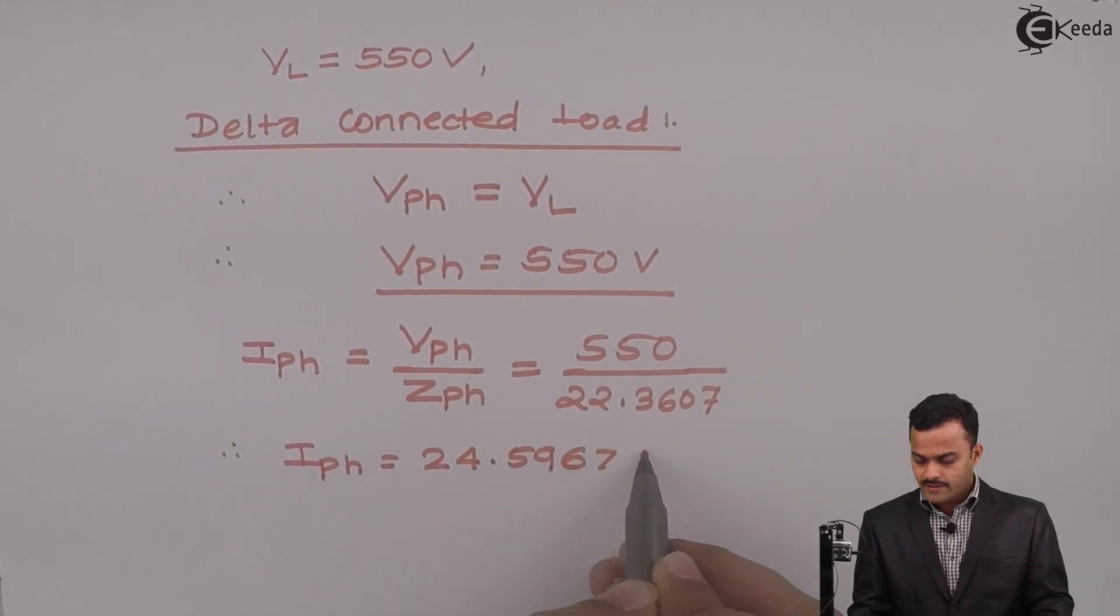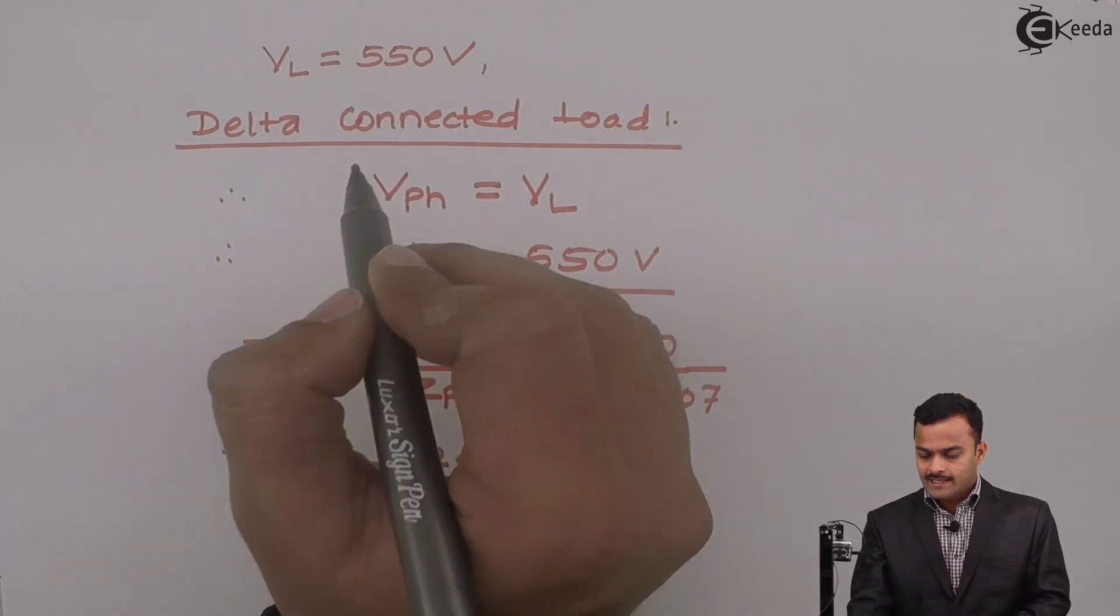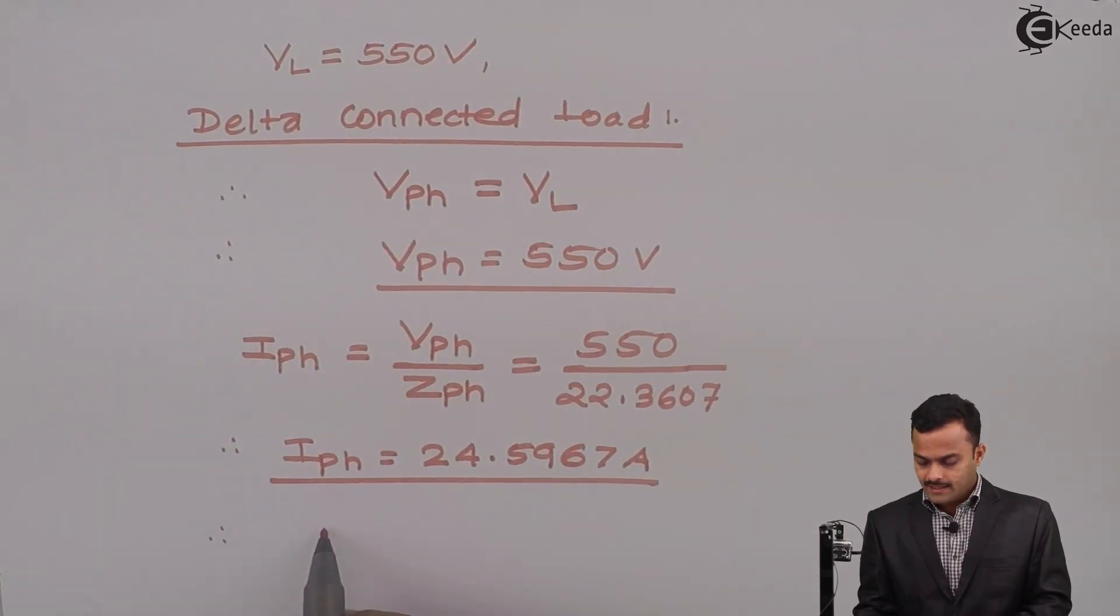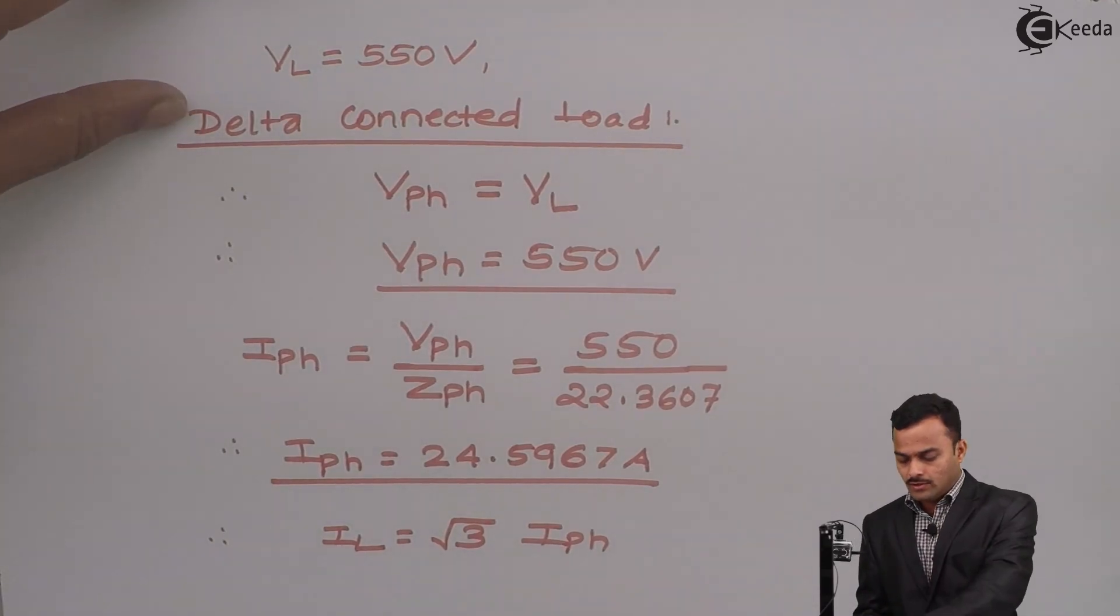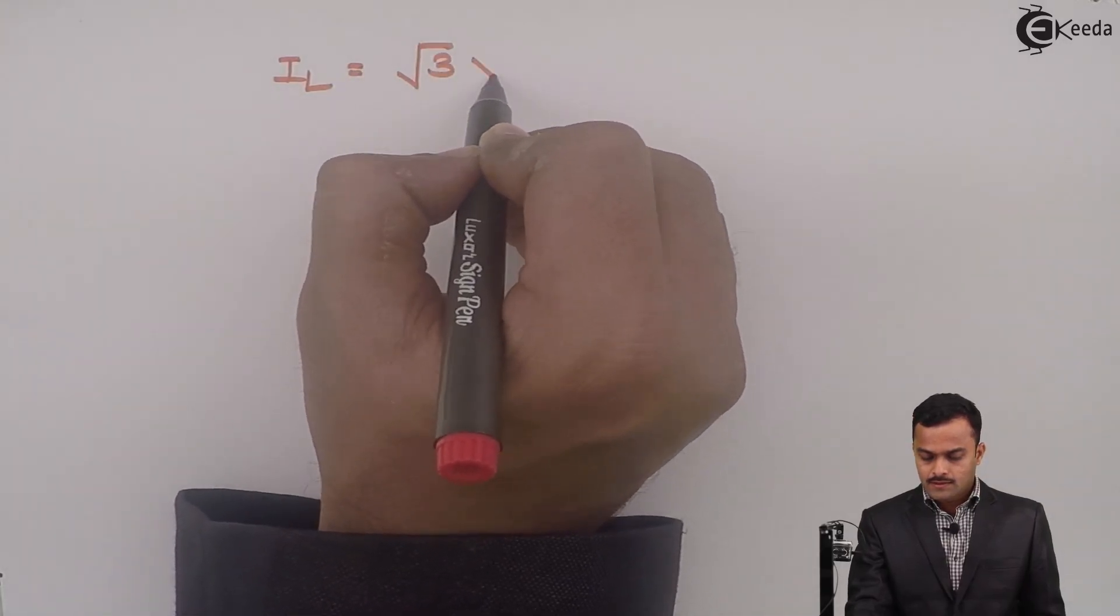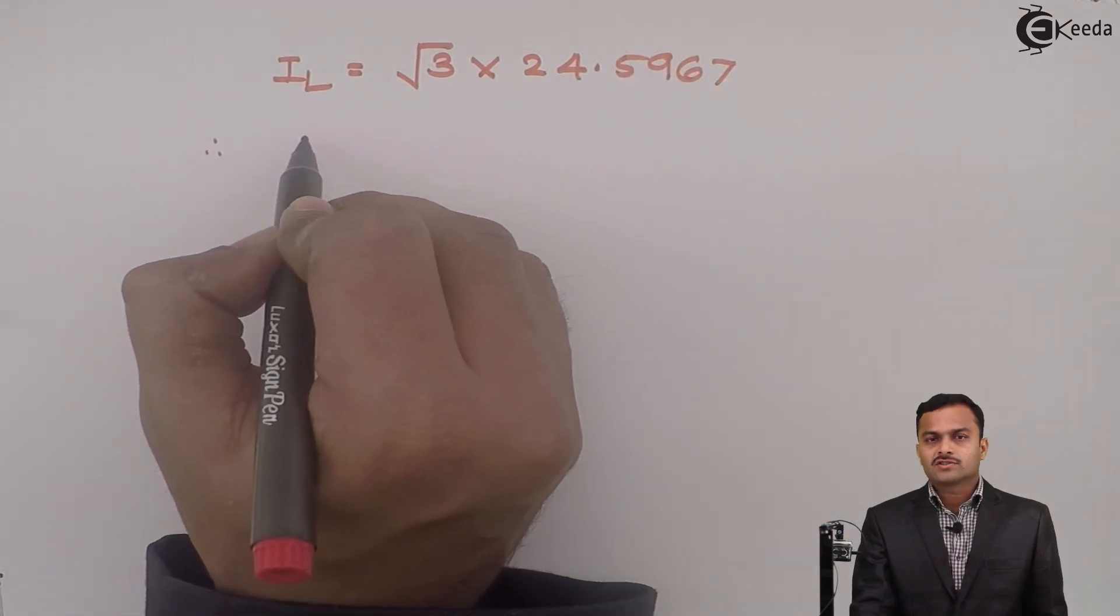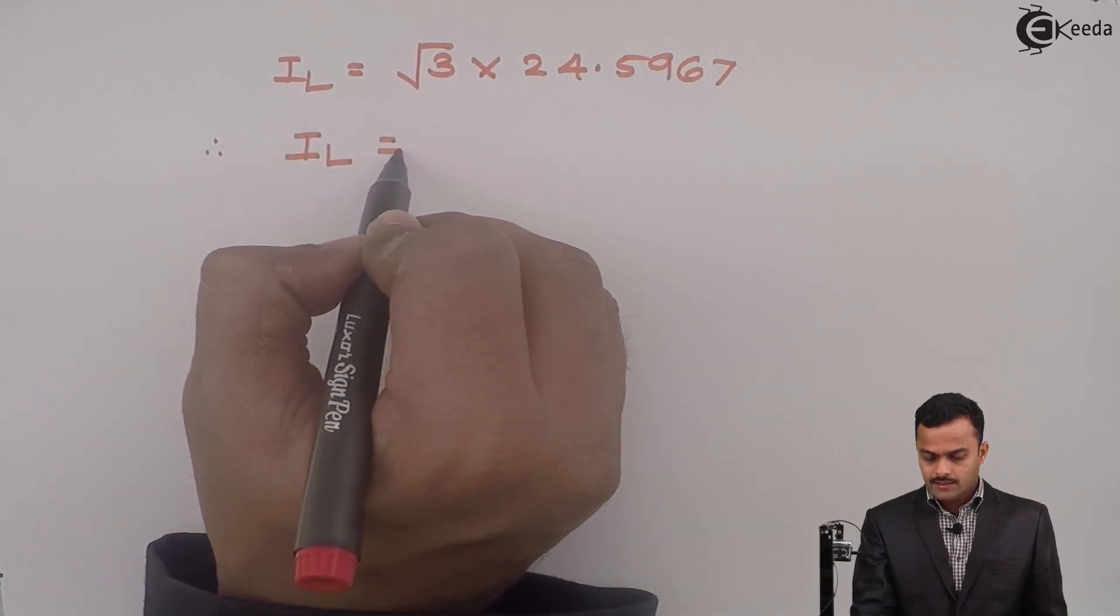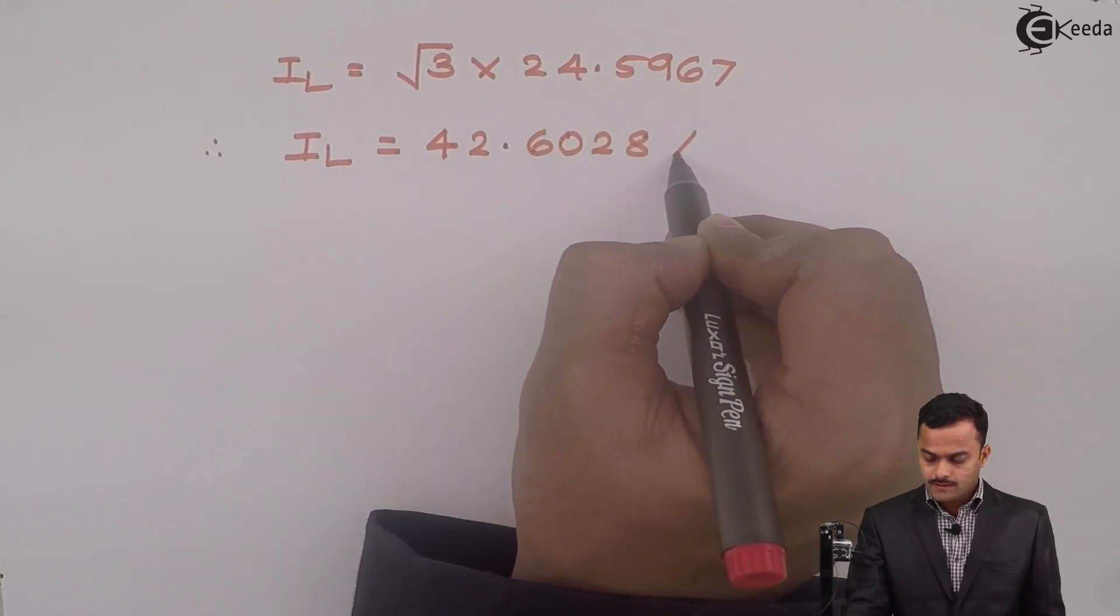So phase current is also known. If I know phase current I can get line current. For delta connected load we know line current is root 3 times phase current. If I substitute the value of phase current I will get line current as root 3 multiplied by 24.5967. After solving this I will get line current equal to 42.6028 ampere.